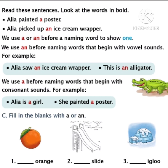We use A or AN before a naming word to show one. We use AN before naming words that begin with vowel sounds. For example, in the blue color box: Aaliyah saw an ice cream wrapper. This is an alligator. The word alligator starts with A. A is a vowel, so we must write AN before alligator.